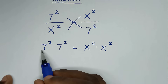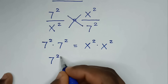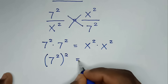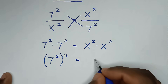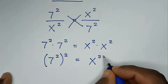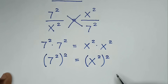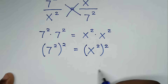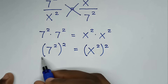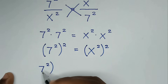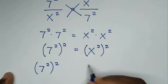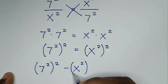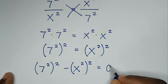Then here, 7 squared times 7 squared is (7²)² is equal to x squared times x squared, which is (x²)². Then in the next step we will take (x²)² to the left side, so it will be (7²)² minus (x²)² is equal to 0.